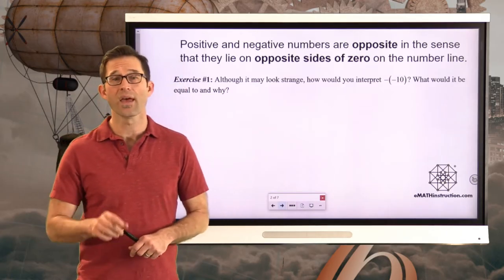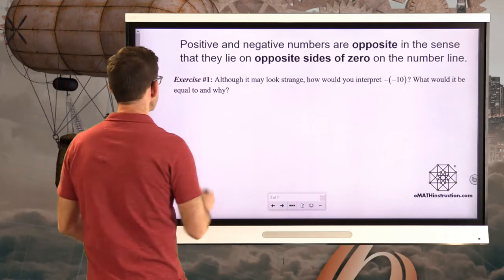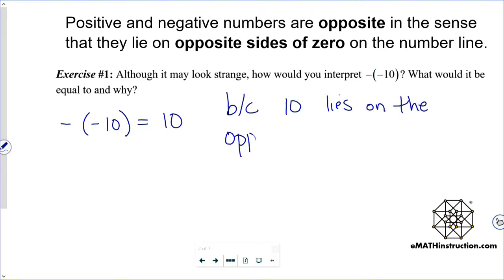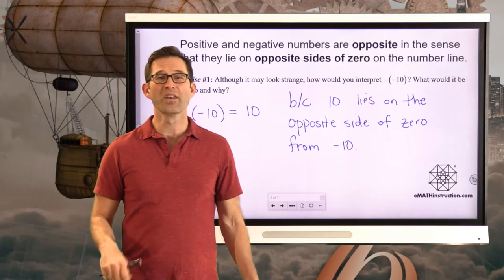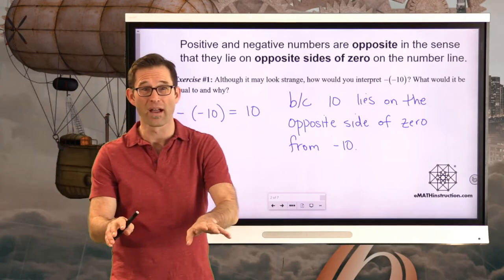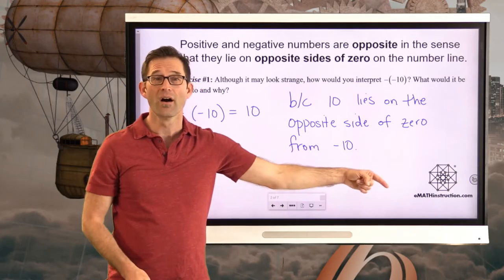If the negative symbol is literally telling us that a number is just like this one but on the opposite side of the origin on a number line, then it stands to reason that negative negative 10 must be equal to positive 10, because positive 10 lies on the opposite side of zero from negative 10. The negative of a negative is the positive. Each time we negate a number, it flips it across the origin to the exact same location but on the other side of zero.